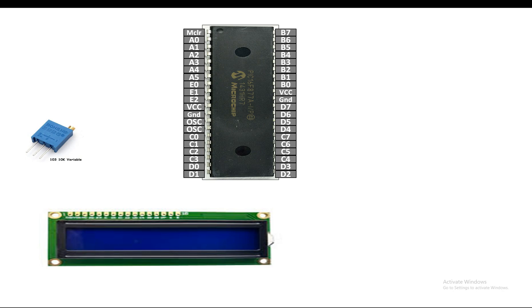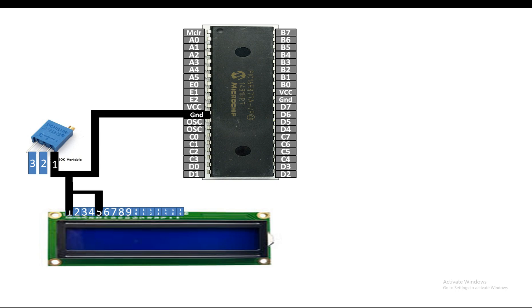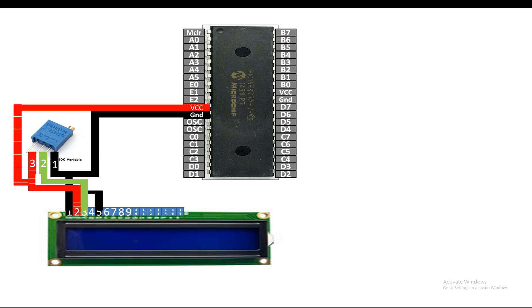To connect the LCD, the potentiometer has three pins labeled one, two, and three on its body. The LCD has 16 pins, one to 16 from left to right. Short pin number one and five of the LCD and send them to the common ground of the PIC along with pin number one of the potentiometer. Pin number three of the LCD is the adjustable contrast pin — send it to pin number two of the potentiometer. For pin number two of the LCD (VDD), send it to the 5V supply, and also give 5V to pin number three of the potentiometer.